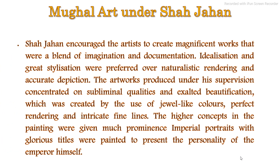Shah Jahan encouraged artists to create magnificent works that were a blend of imagination and documentation. Idealization and great stylization were preferred over naturalistic rendering and accurate depiction. The artworks produced under Shah Jahan concentrated on subliminal qualities and exalted beautification, created by the use of jewel-like colors, perfect rendering, and intricate fine lines. The higher concepts in the painting were given much prominence. Imperial portraits with glorious titles were painted to present the personality of the emperor himself.